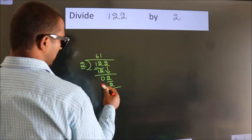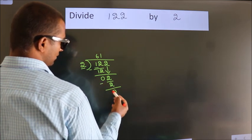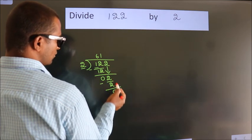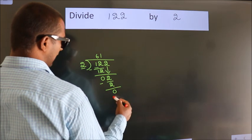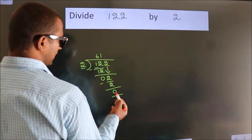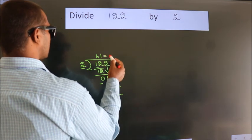Now we subtract. We get 0. After this, no more numbers to bring it down. And we got remainder 0. So this is our quotient.